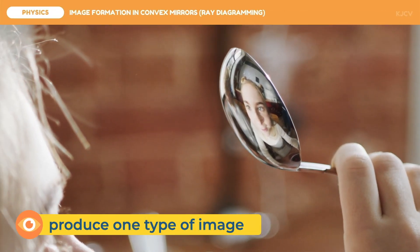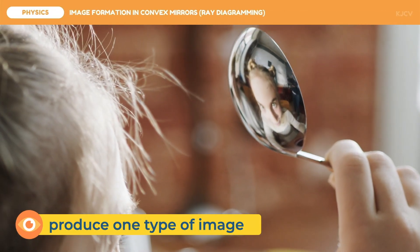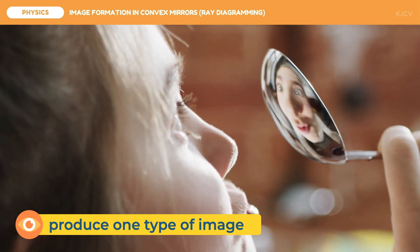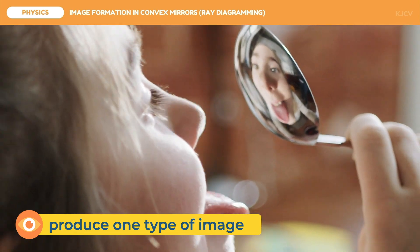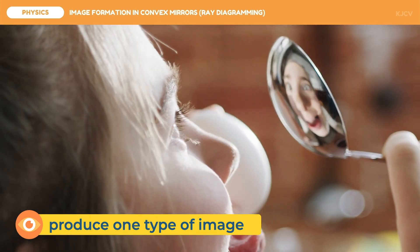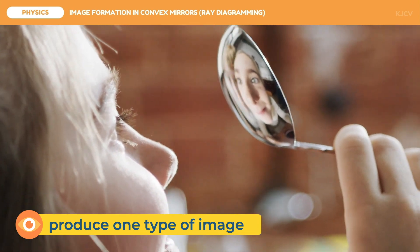Convex mirrors only produce one type of image regardless of where we put the object in front of the mirror. As we can see in this video, the girl's image is reduced and formed inside the mirror which makes it upright and virtual.